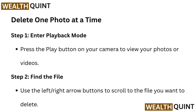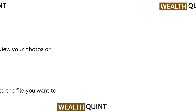Delete one photo at a time. Step 1: Enter playback mode — press the play button on your camera to view your photos or videos. Step 2: Find the file — use the left-right arrow buttons to scroll to the file you want to delete.